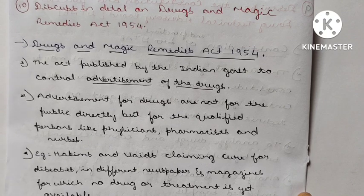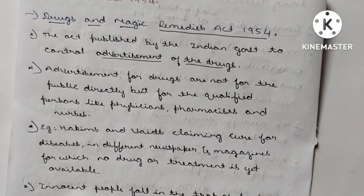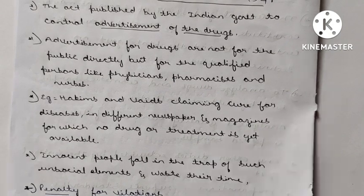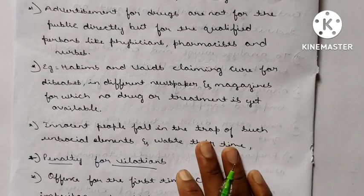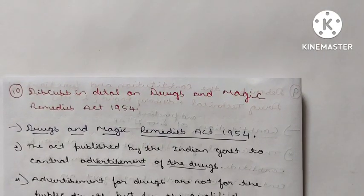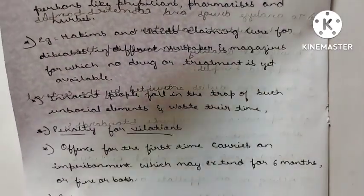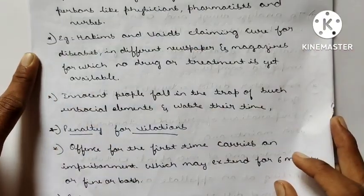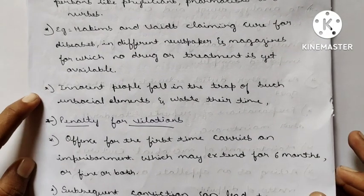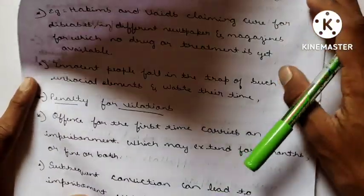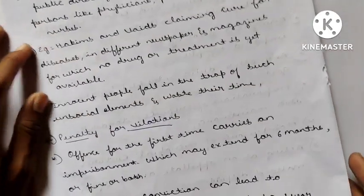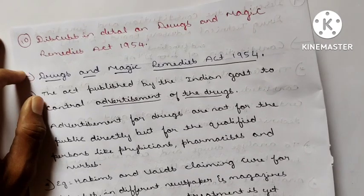Advertisement is permitted for qualified persons like physicians, pharmacists, and nurses only. Examples include Hakims making claims of curing diseases in newspapers and magazines for which no drug or treatment is yet available. Innocent people fall into the trap of such unsocial elements, wasting their time and money. Penalty for violations: the first offense carries imprisonment extending to six months, or fine, or both. Subsequent conviction can lead to imprisonment extending to one year or with fine.